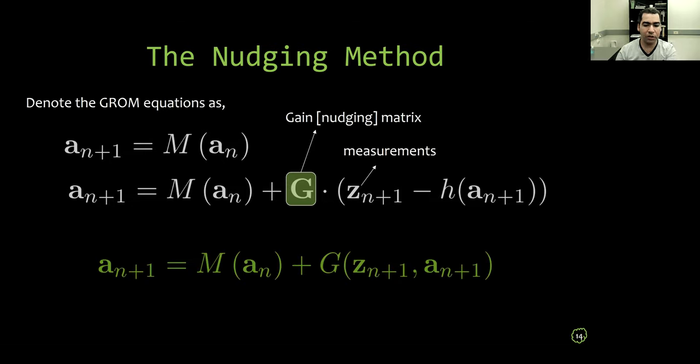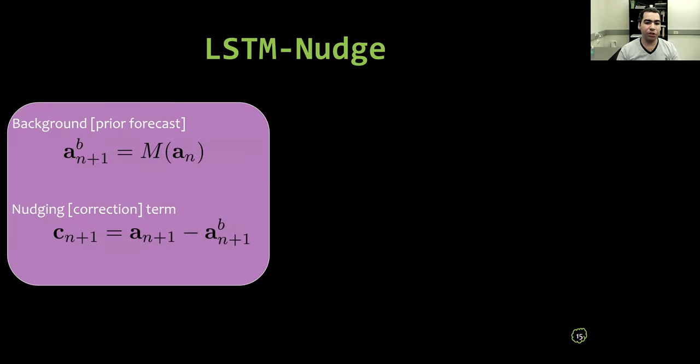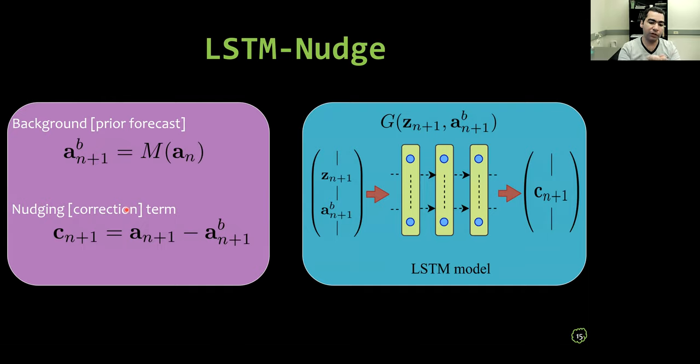In the present study, we relax this assumption and assume that we have a nonlinear function G that takes the measurements and prior forecasts from GROM and provides this correction as a whole. So we have background information or prior forecasts from GROM here. But we know that we need to add some correction or nudging to drive this prior forecast towards the true values. So at this stage, we put a data-driven tool or we interfere with a data-driven tool, which here we use a long short-term memory neural network or LSTM, to learn the mapping G from the measurements Z and the prior forecast A to compute or predict the correction term C. So here, our core model is a physics-based model. And we only augment or correct its prediction using a data-driven tool in a data-assimilation framework.